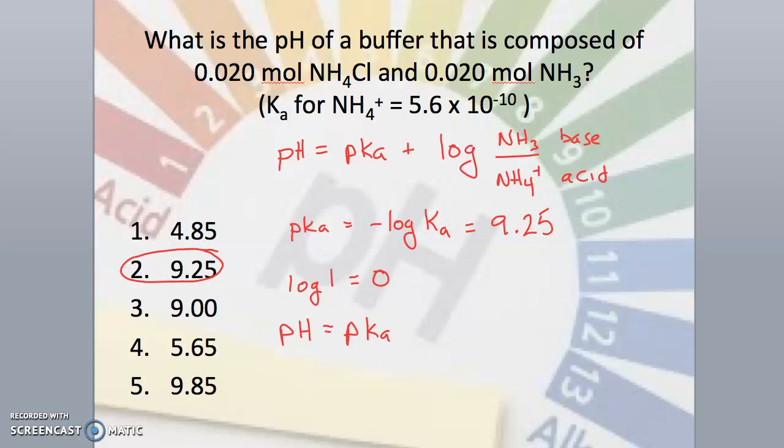When placed in water, the salt will dissociate, yielding 0.020 moles of both the ammonium ion and the chloride ion. The chloride ion is not part of our buffer system, and it is also a neutral ion, so it will have no effect on the pH.